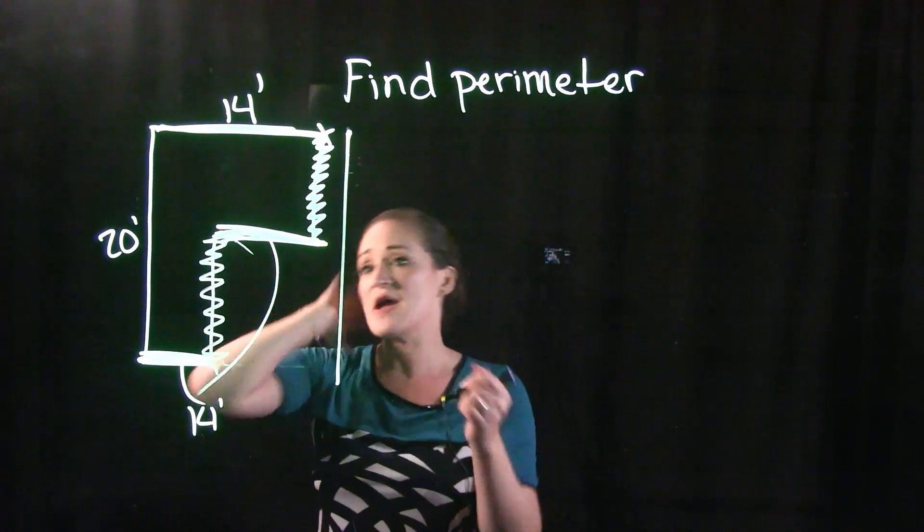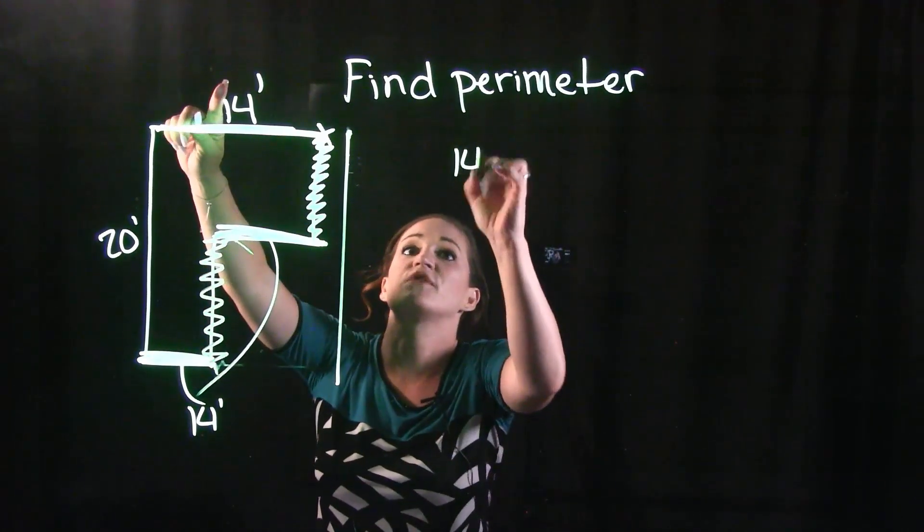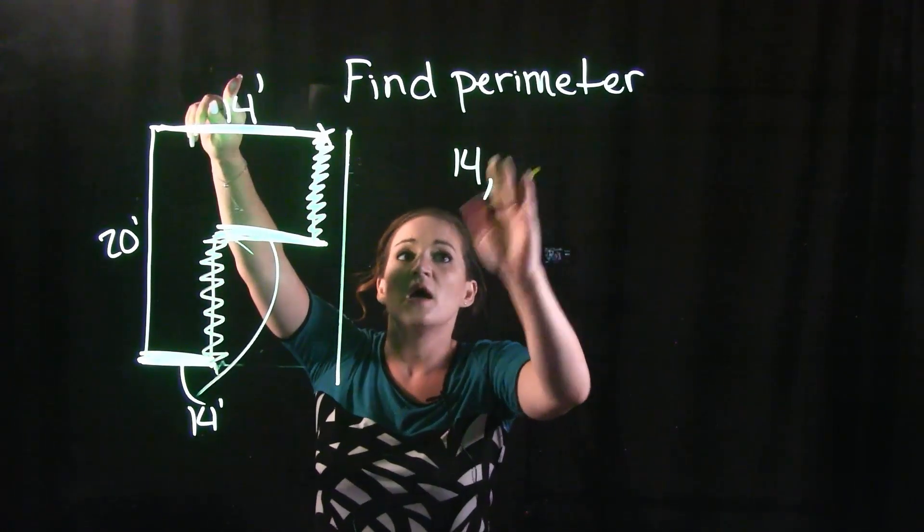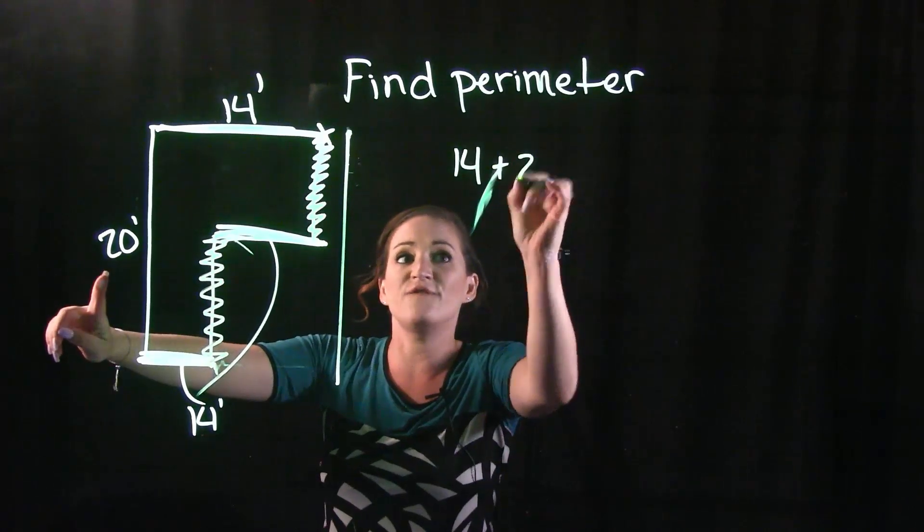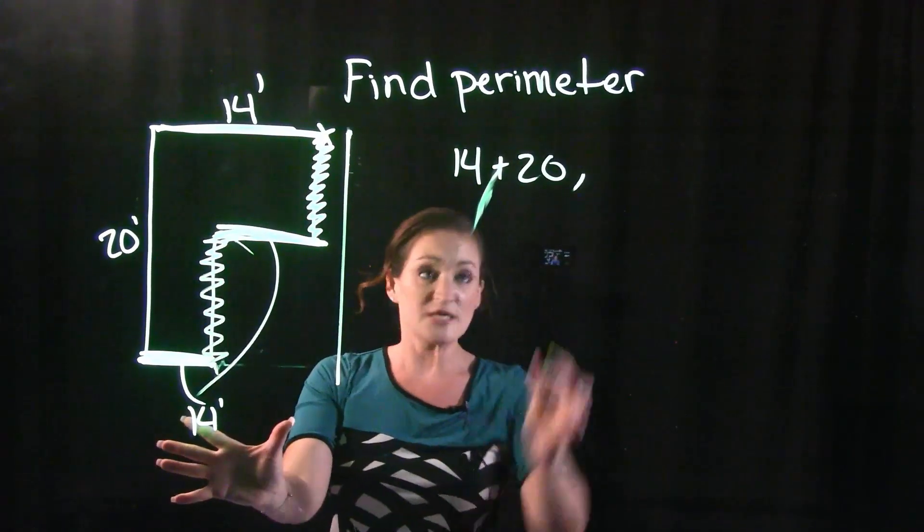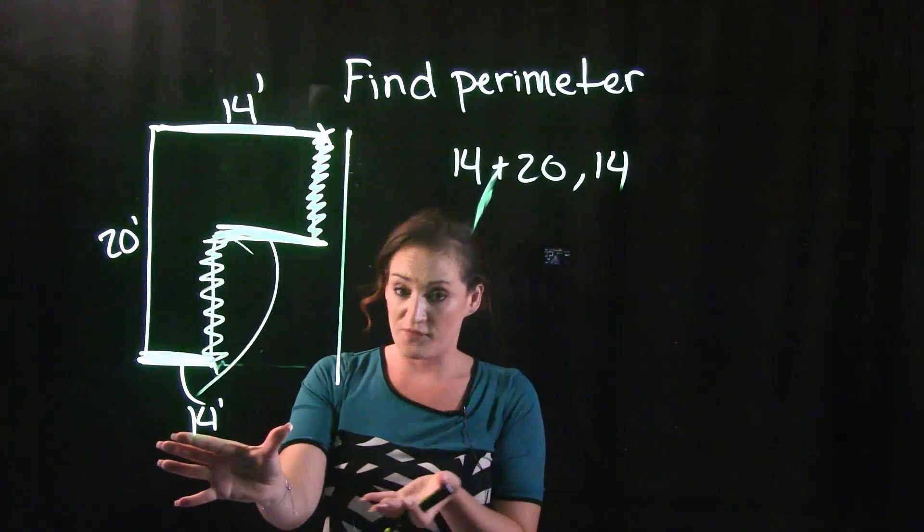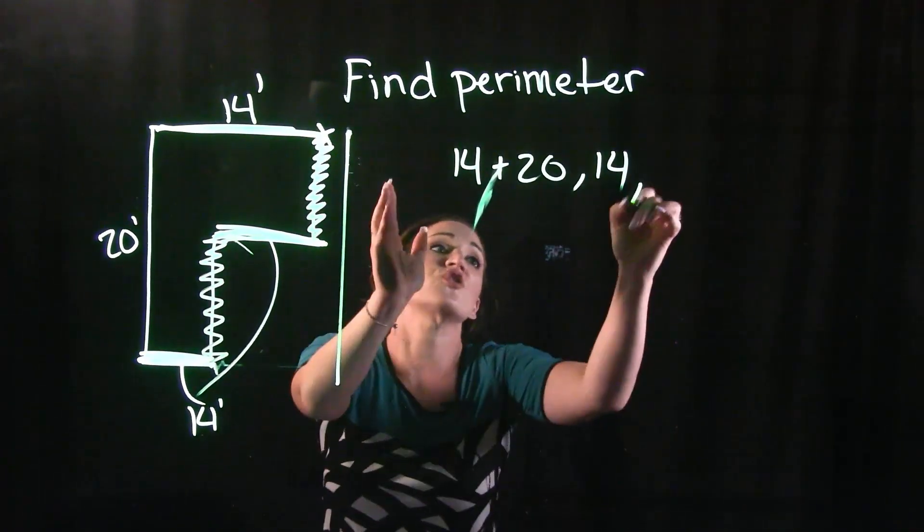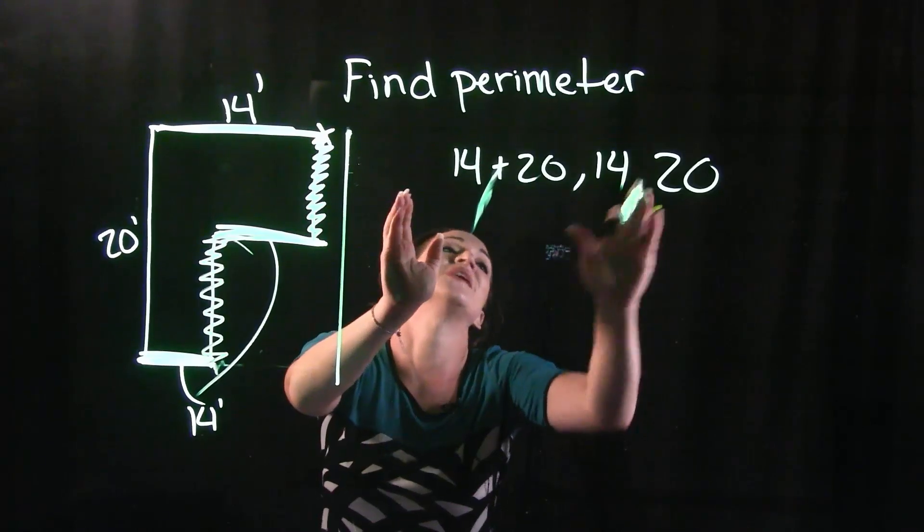So technically when I'm finding the perimeter of this, let's see, I have the 14 feet that I know plus the 20 feet that I also know here. But this side opposite over here is also another 14 feet, and this length over here is also another 20 feet.